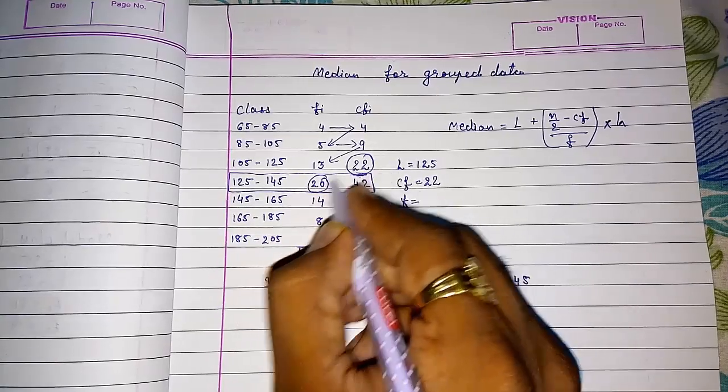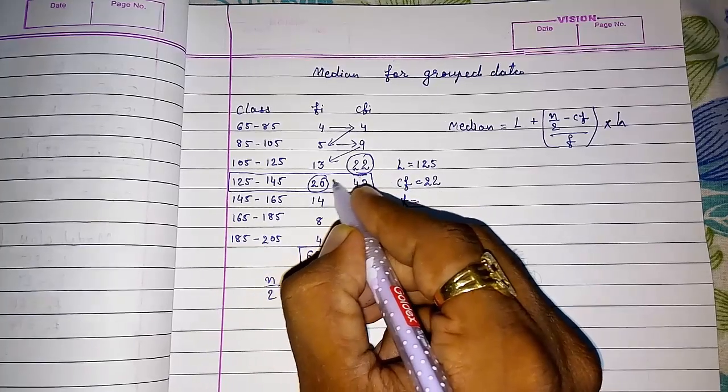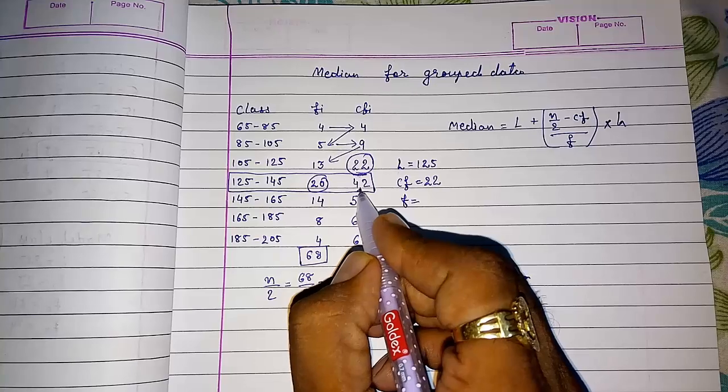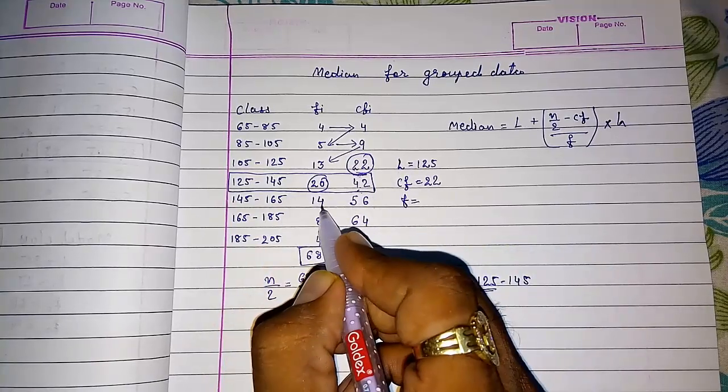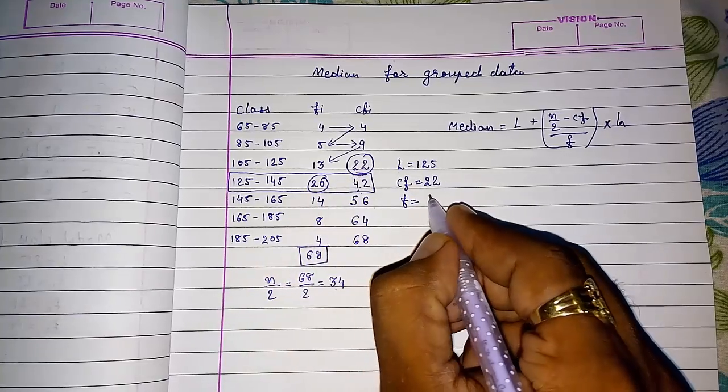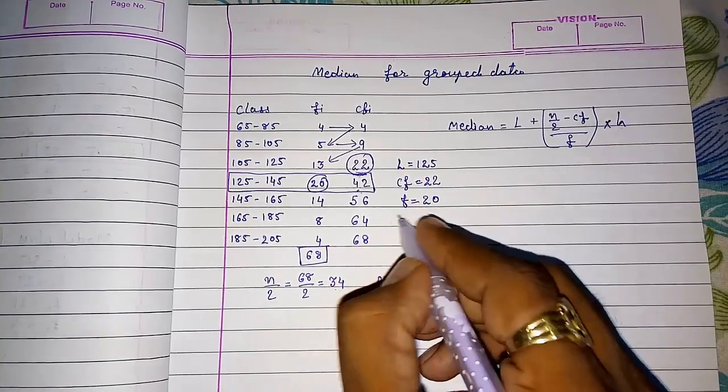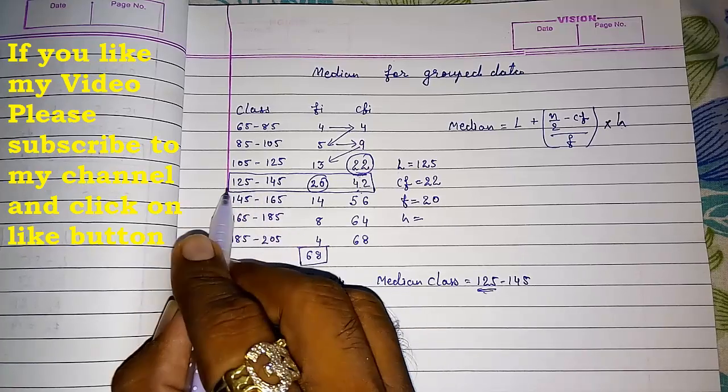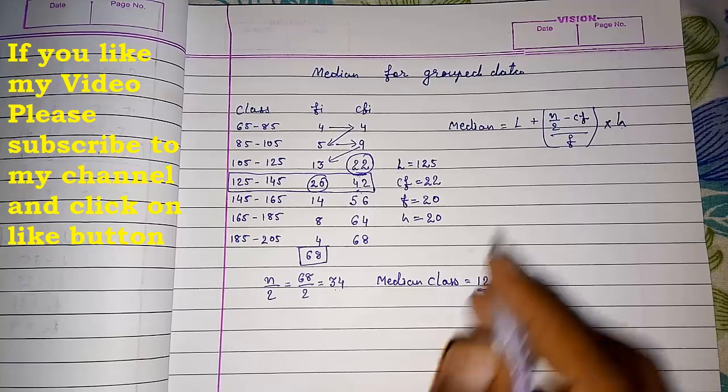Frequency means the frequency of that class. Always this will come in this order, or you have to memorize this so you never take the wrong frequency. Otherwise students sometimes take 42 as CF or 14 as F. So please be careful. Our frequency is 20. H means the class interval, so the gap between these two is 20.